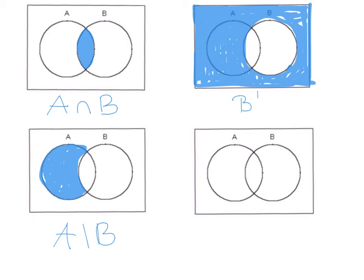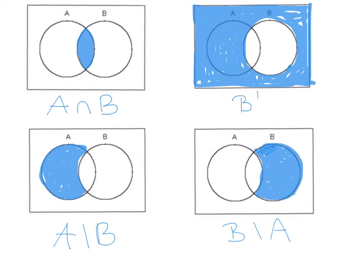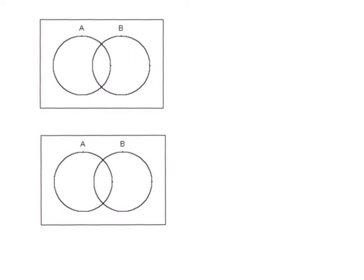Let's try the next one: B minus A. In this case, everything in B but not in A. So the same idea — shade everything in B but not in A. Take it down.